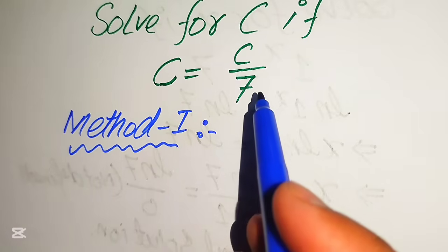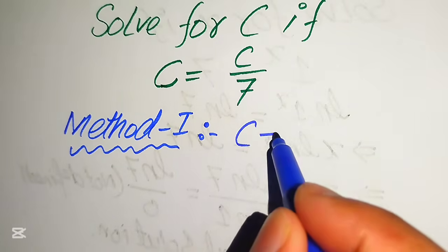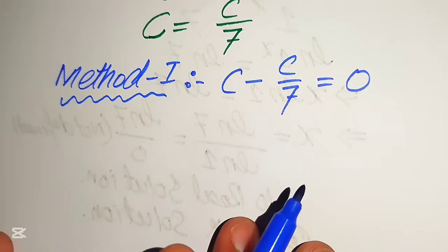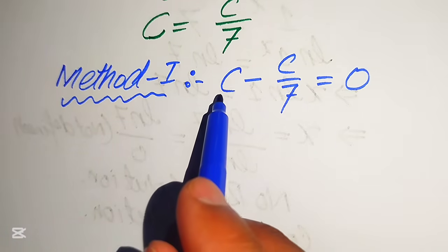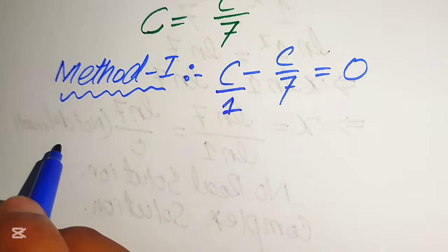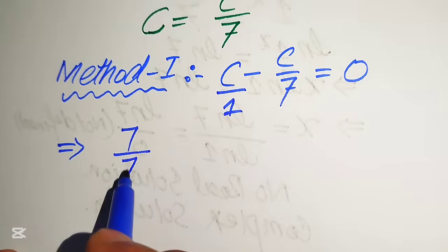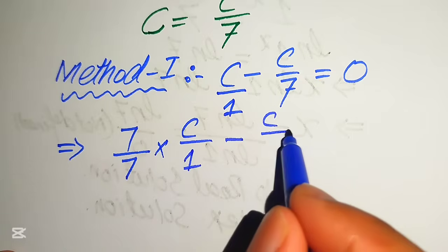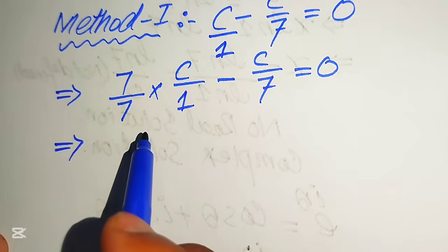In the first method, we move c over seven to the left hand side, so it becomes c minus c over seven equals zero. The denominator of the second term is seven, so our next target is to make the denominator of the first term seven as well. Since the denominator of the first term is one, we multiply and divide it by seven, giving us seven over seven times c over one, minus c over seven, equals zero.